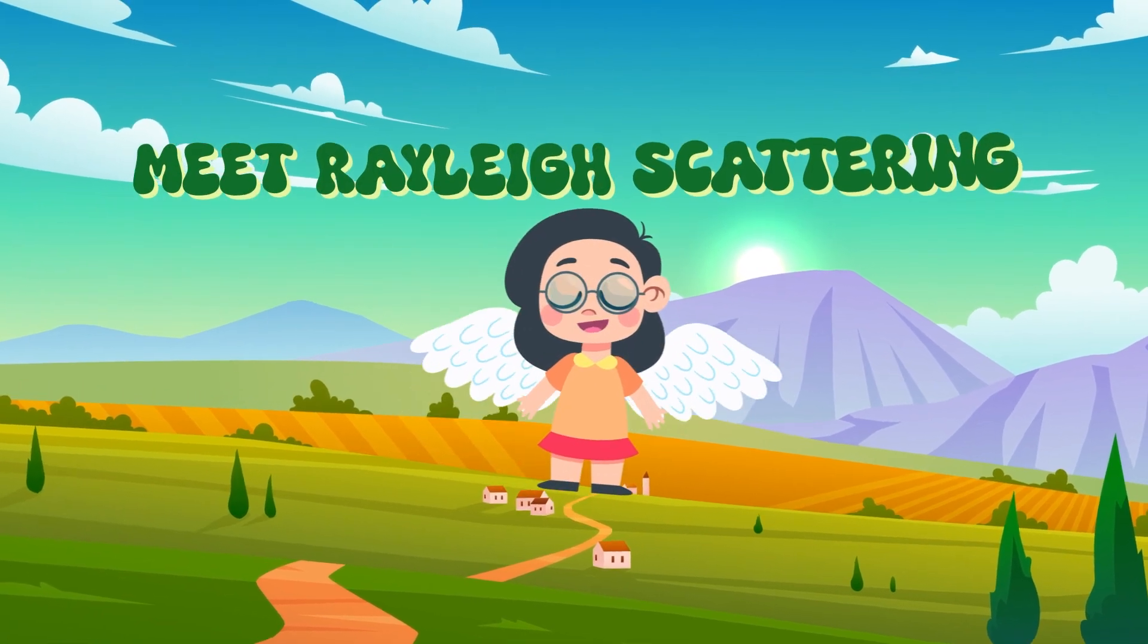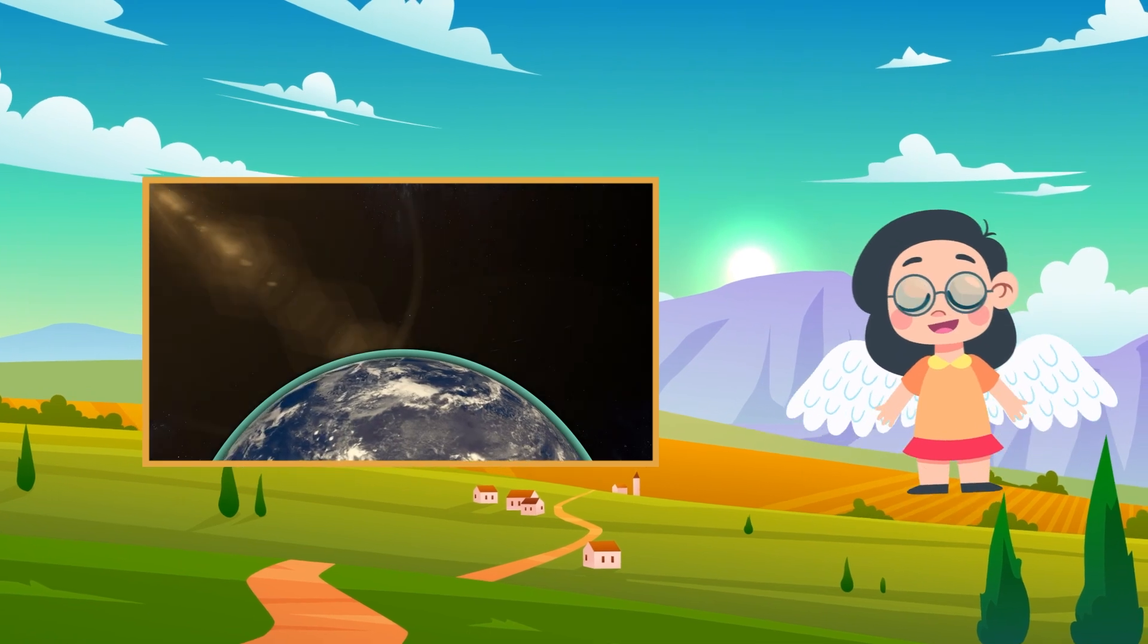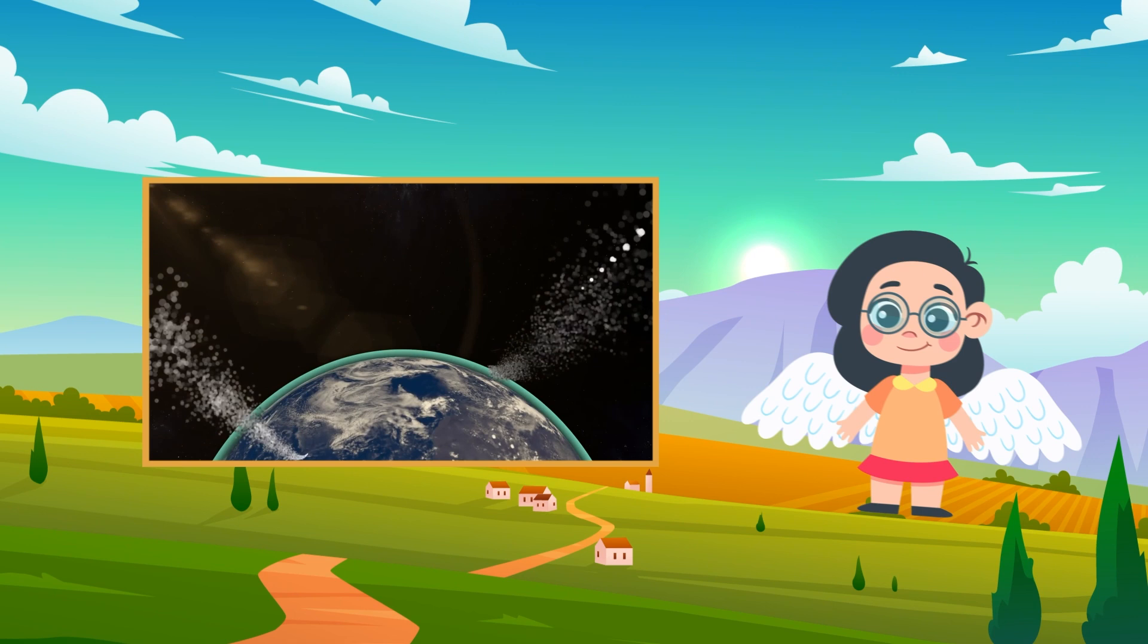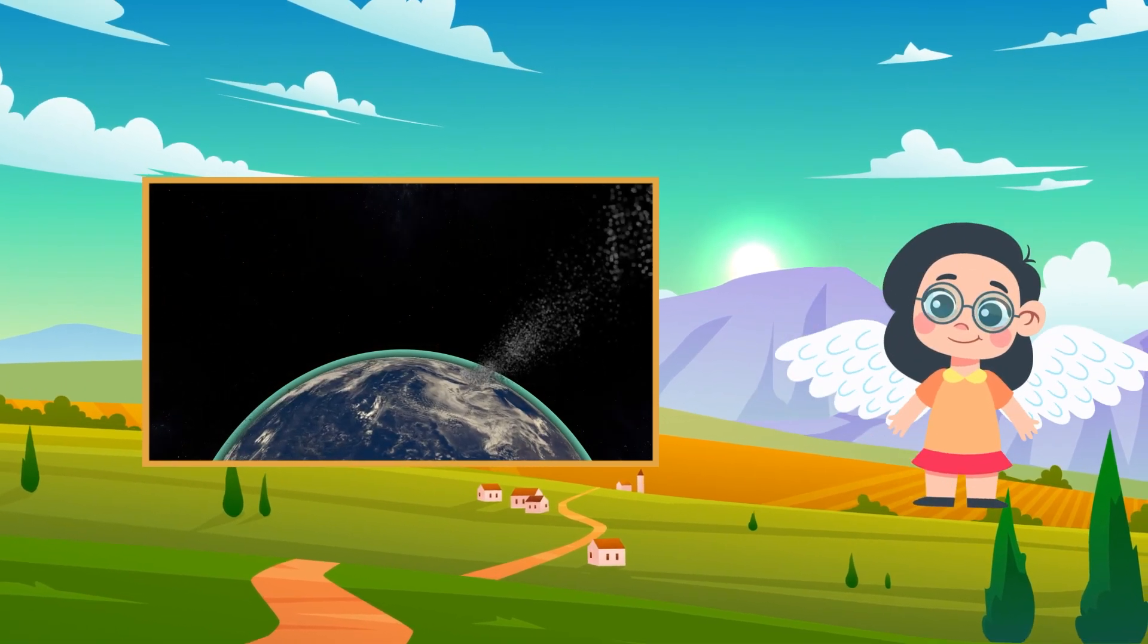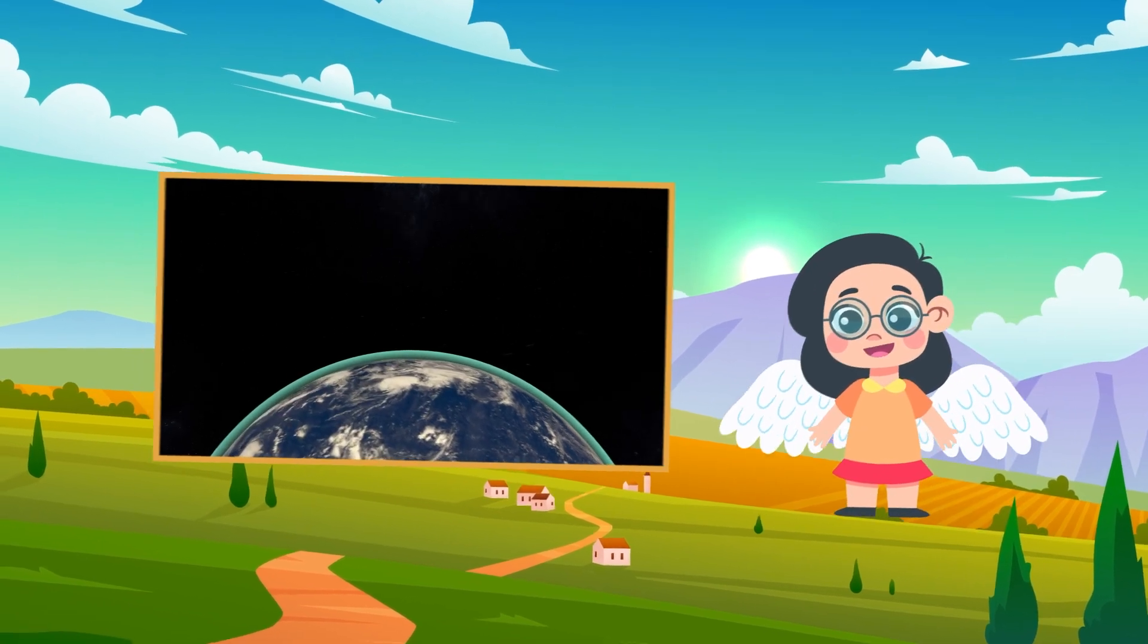Meet Rayleigh Scattering. When sunlight travels through the atmosphere, it bumps into tiny air particles. This makes the light scatter or spread out in all directions. But here's the cool part. Blue light scatters more than other colors because it has shorter, smaller waves. So, the sky looks blue because the blue light spreads out and reaches our eyes from every direction.